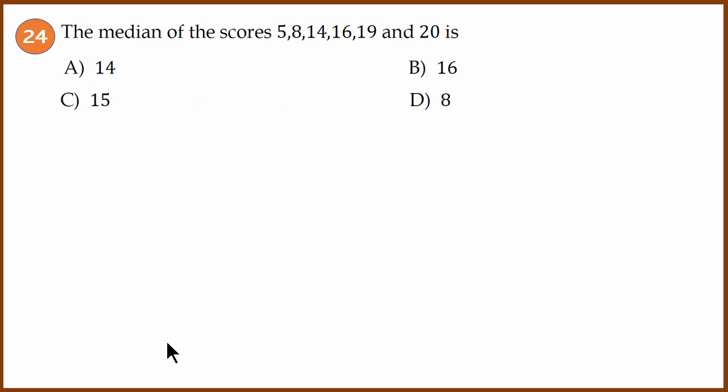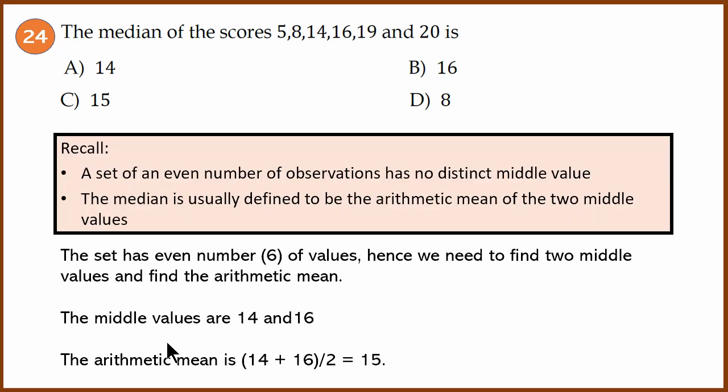Statistics question: you have been given scores and you have to find the median. A set of an even number of observations has no distinct middle value, so the median is defined as the arithmetic mean of the two middle values. We take the two middle values and find the arithmetic mean. There are an even number of values here, so the median is the arithmetic mean of 14 and 16, which is 15. The answer is C.